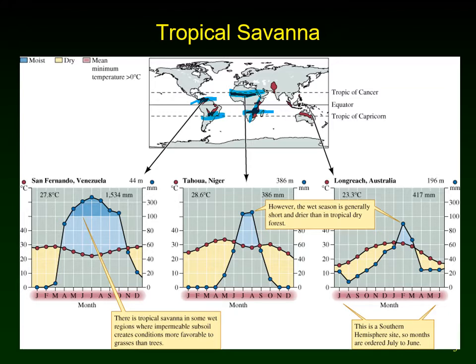We can find tropical savannahs in places other than Africa. We obviously have them in South America — in South Central Brazil, Venezuela, and Colombia. We can also find them in Asia and India, and across Australia.